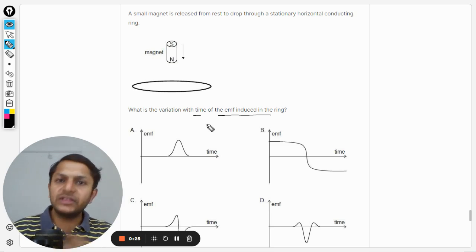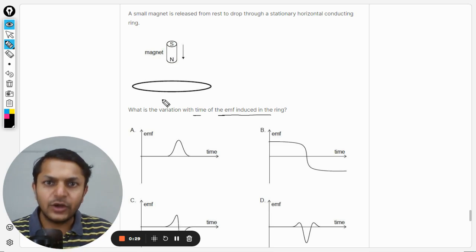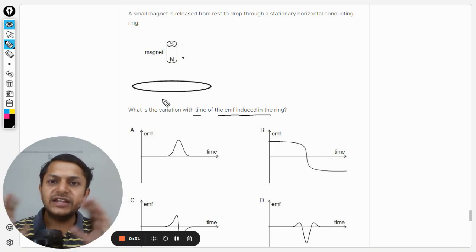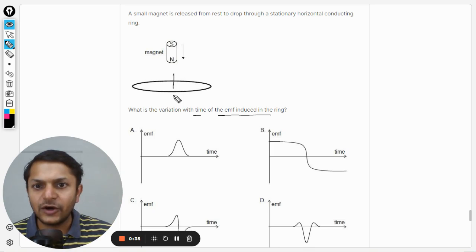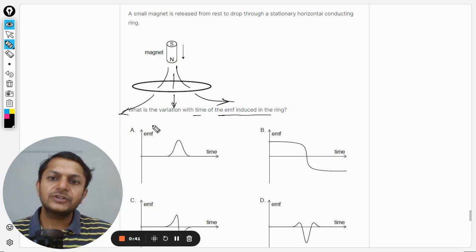So one thing is very clear that once it is falling, how is it going to behave? Obviously the induced current will be there. The magnetic field is in the downward direction, you see, like this.